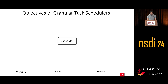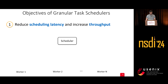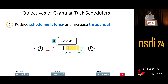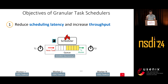There are many objectives for such granular task schedulers at scale. First, it needs to maintain very high scheduling throughput as well as low scheduling latency. Since these are short-lived tasks, workers run on the order of thousands of tasks per second, meaning the scheduler needs to make tens of millions of decisions per second, putting a lot of load on the scheduler.